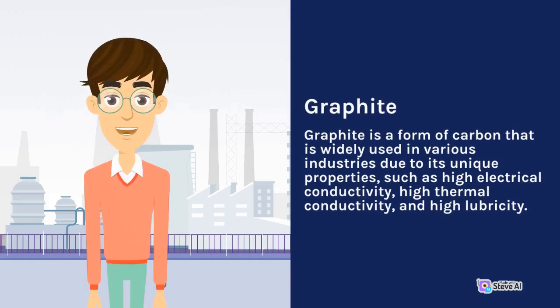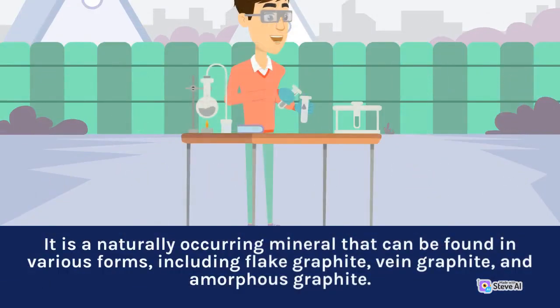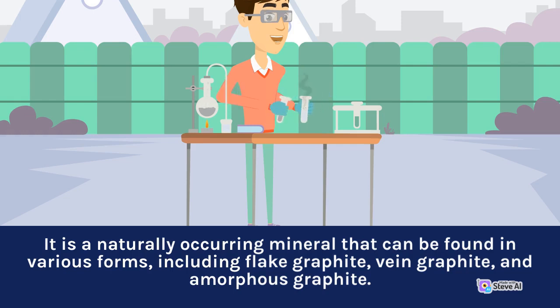Graphite is a form of carbon that is widely used in various industries due to its unique properties, such as high electrical conductivity, high thermal conductivity, and high lubricity. It is a naturally occurring mineral that can be found in various forms, including flake graphite, vein graphite, and amorphous graphite.